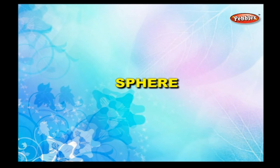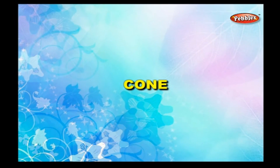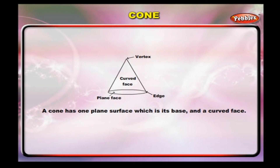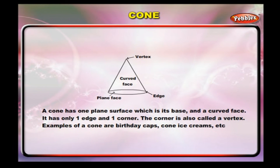Sphere. A sphere has no edges or corners. It has only one curved face. The objects which are in the shape of a ball are known as a sphere. Cone. A cone has one plain surface which is its base and a curved face. It has only one edge and one corner, also called a vertex. Examples of a cone are birthday caps, cone ice creams, etc.